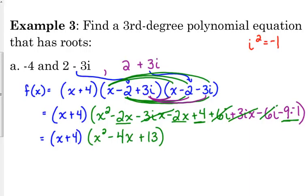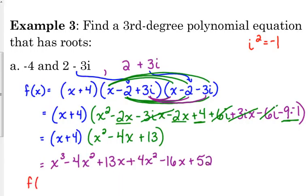And then, final step, all we need to do is distribute the binomial to the trinomial, so we've got x cubed minus 4x squared plus 13x plus 4x squared minus 16x plus 52. So, final answer is x cubed. The 4x squares cancel. Minus 3x. Plus 52.